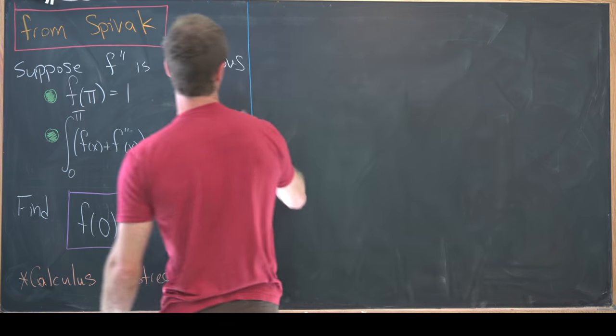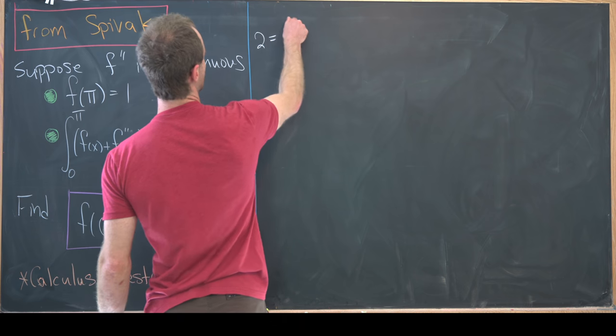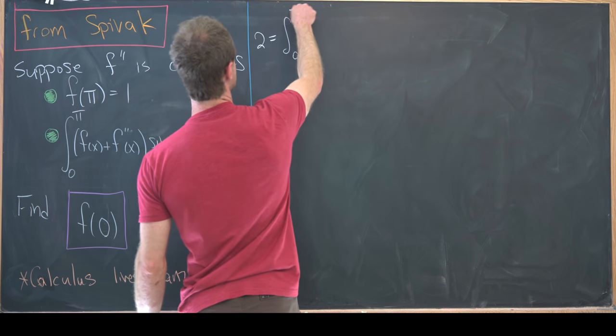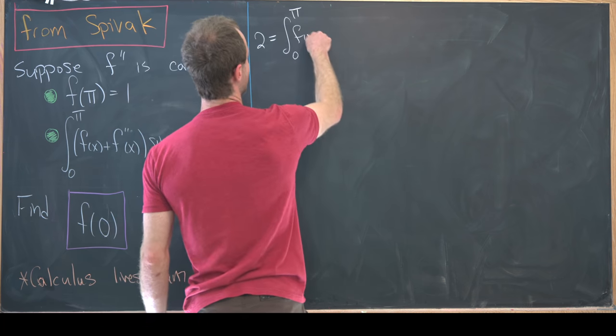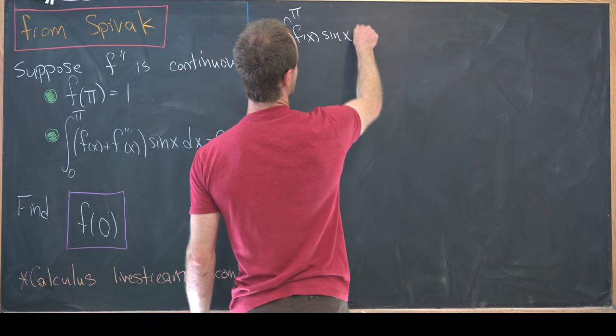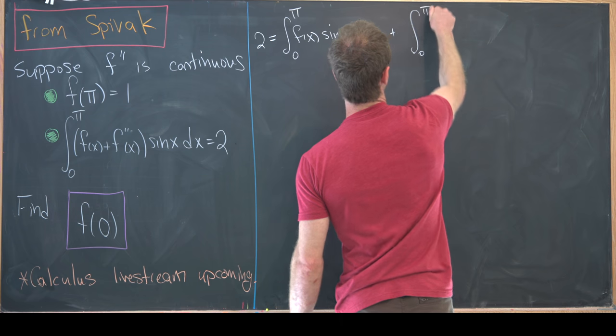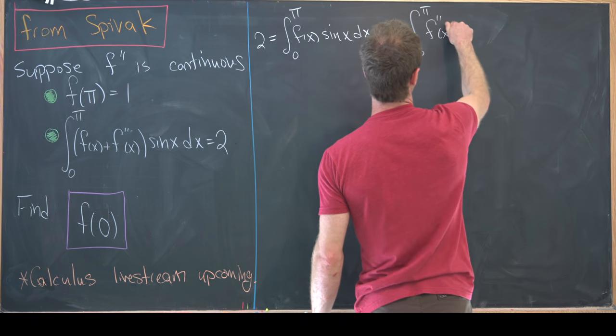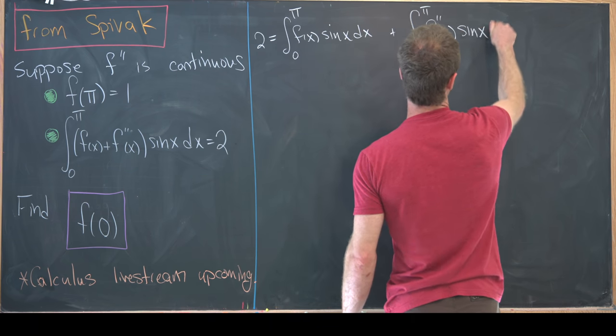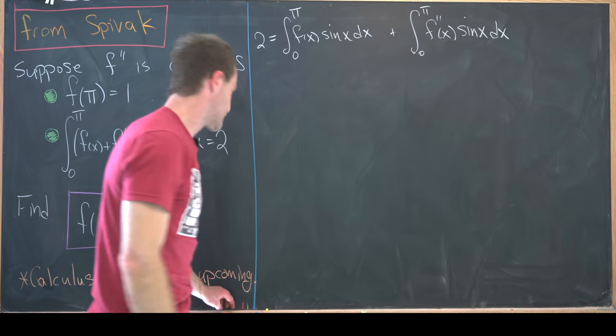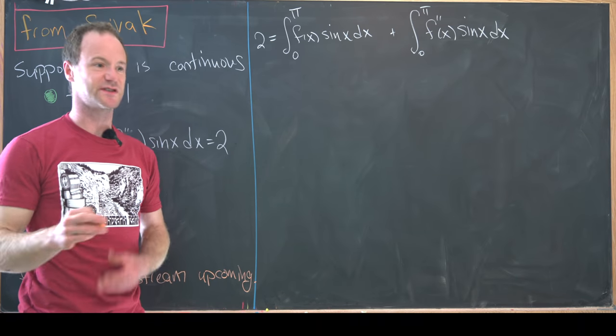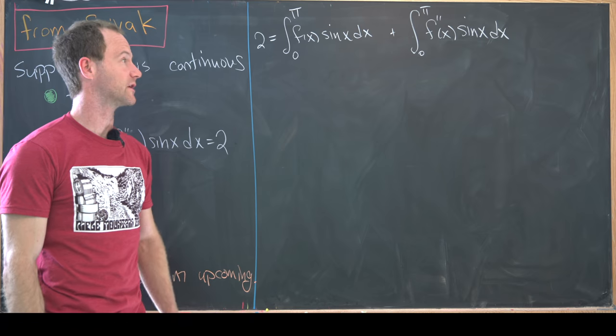Let's start with this condition. I'm going to write it as two equals the integral from zero to π of f(x) times sin(x) dx plus the integral from zero to π of f''(x) times sin(x) dx. We can split that up because we know everything's continuous.